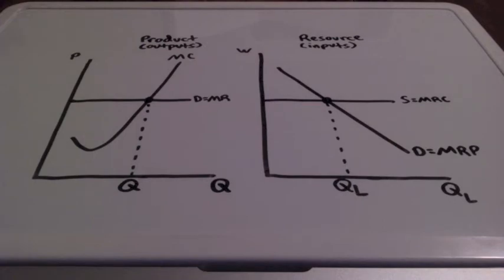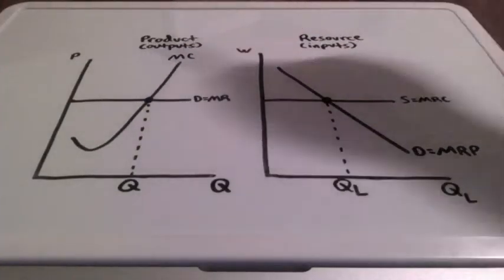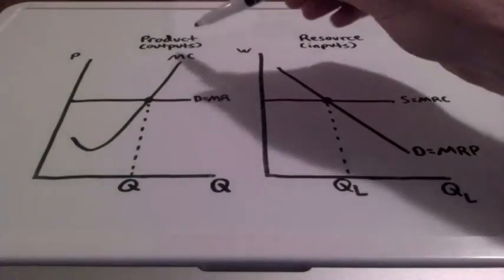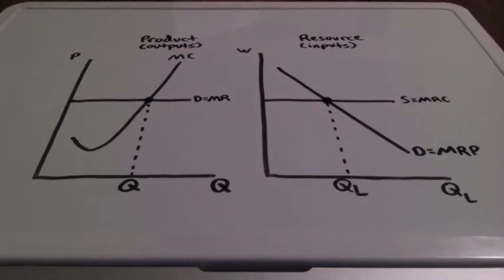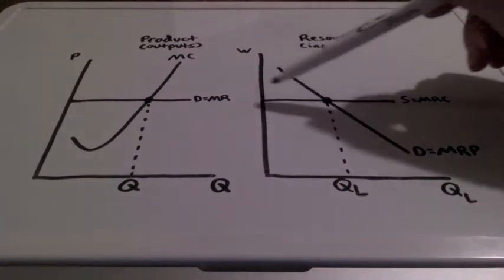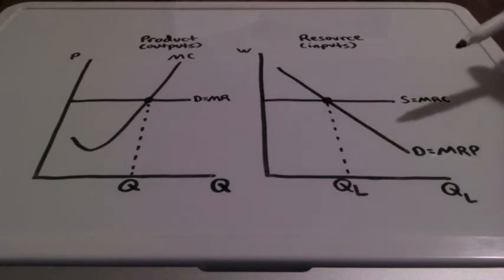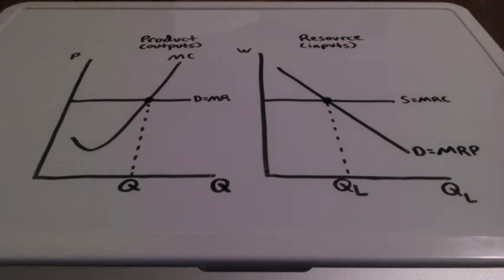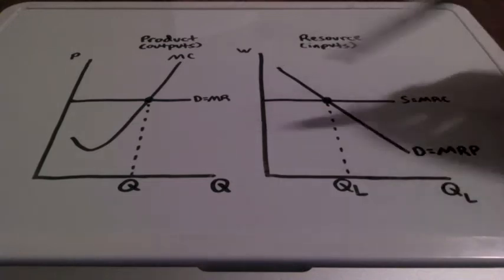For the product market, we have an upward sloping marginal cost curve, which represents the firm's supply curve — the additional cost for producing each additional quantity of output. In the resource market, our supply curve represents the supply of labor, and it equals the MRC, which stands for marginal resource cost — the additional cost for each additional input. The supply of labor equals the marginal resource cost curve because the additional cost for each worker is going to be constant.